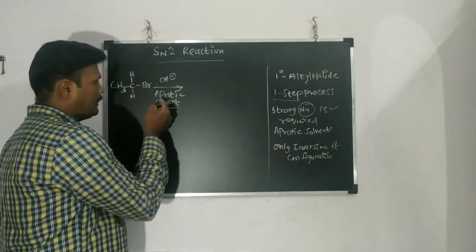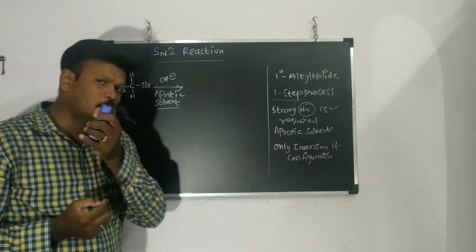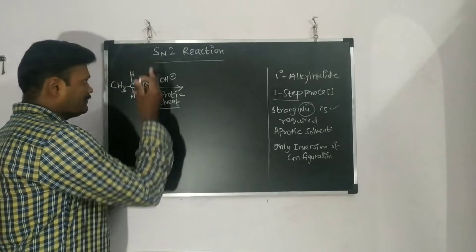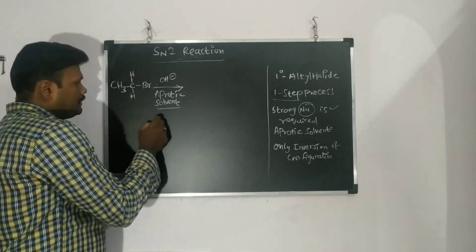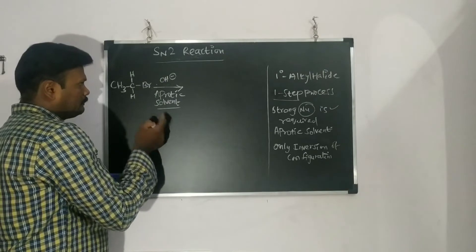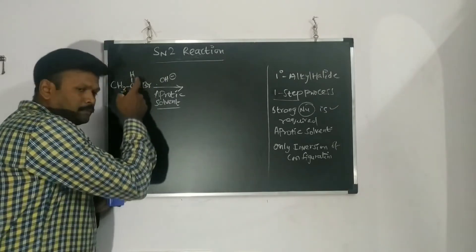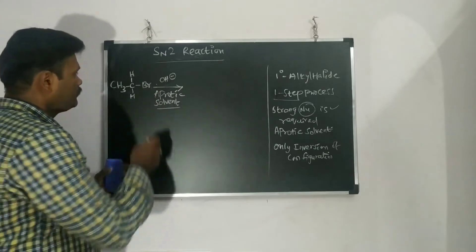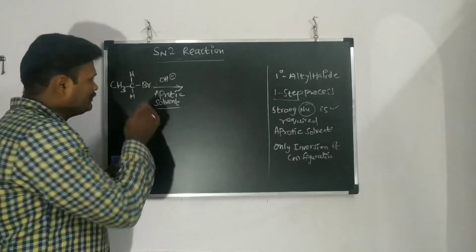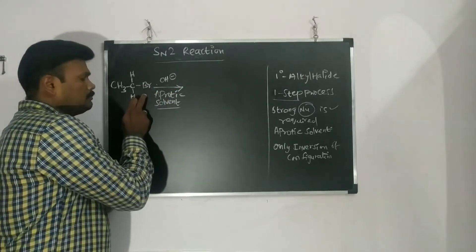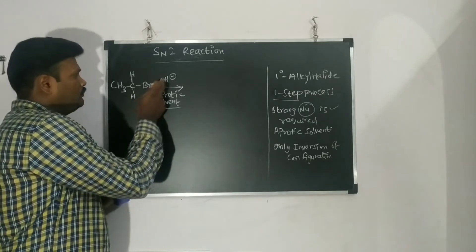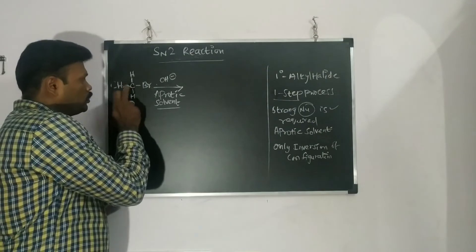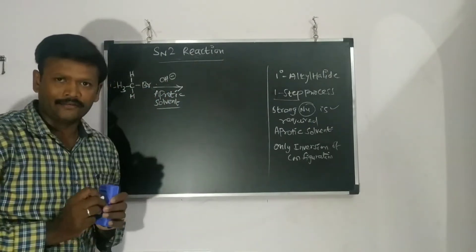In SN2, we use an aprotic solvent. In SN1, a protic solvent was used because it helps cleave the leaving group (Br⁻) as HBr, which leaves on its own. But in SN2, the leaving group will not move on its own — we have to attack with the nucleophile, which removes the Br⁻.